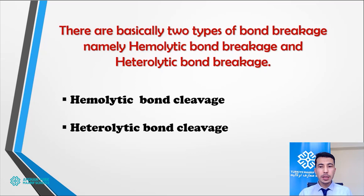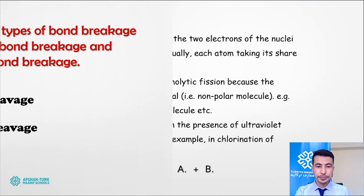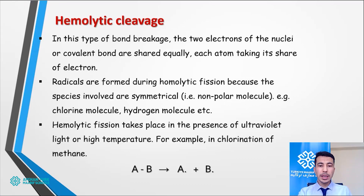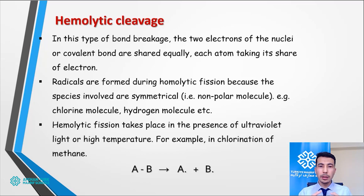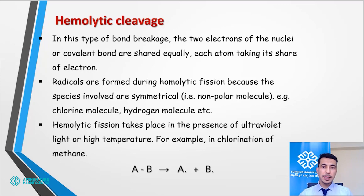Let's study hemolytic cleavage. In this type of bond breakage, the two electrons of the covalent bond that are shared equally will break apart, and each atom will take its share of electrons. As seen with hydrogen, each hydrogen atom takes its own electron. Remember, hemolytic and heterolytic bond cleavage apply to covalent bonding, not ionic bonding. From each side, one orbital with one electron participates, and in hemolytic cleavage each atom takes its share when the bond breaks.